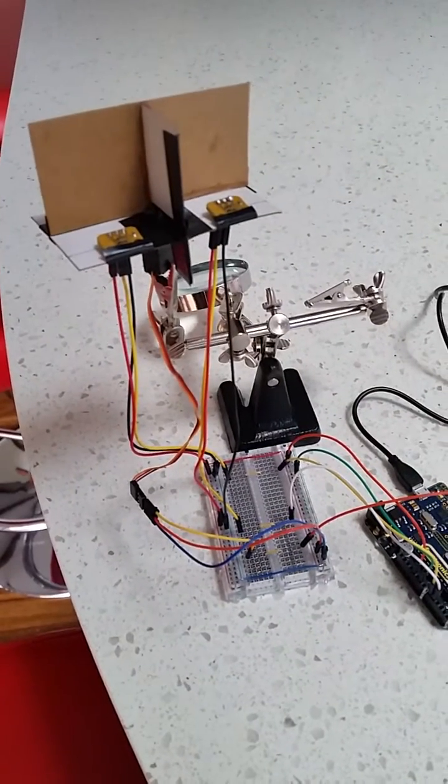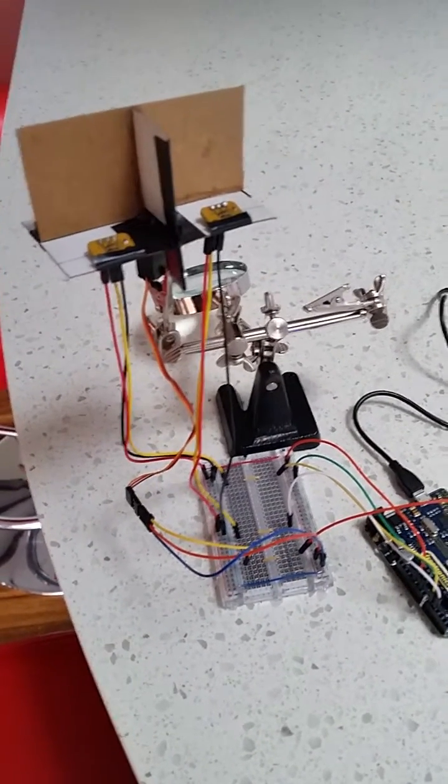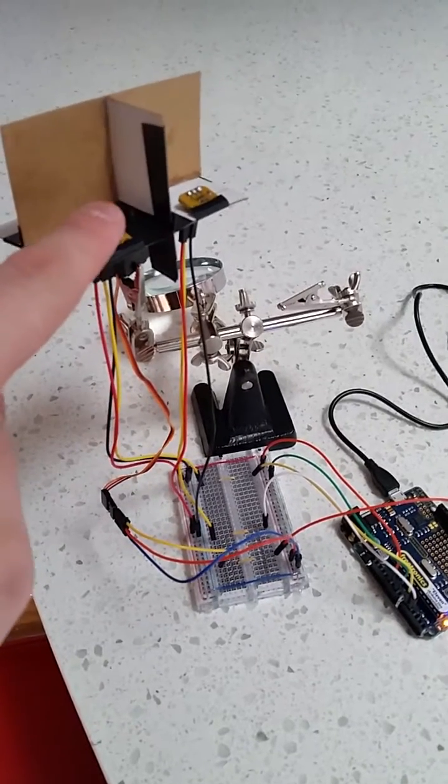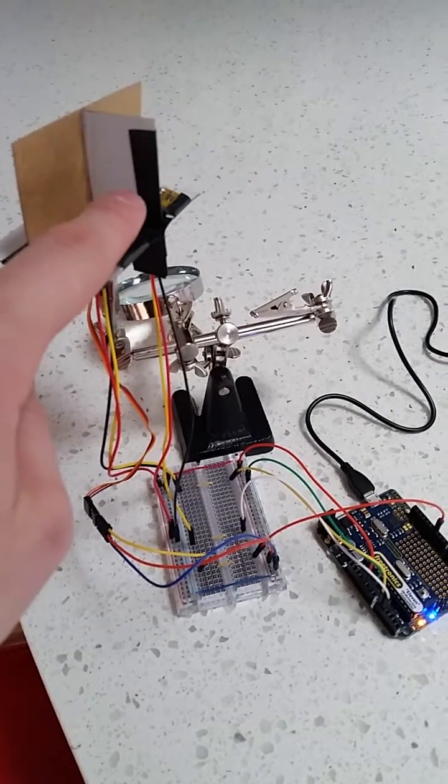All this does is seek equilibrium between the two sensors. You can see if I try to cover one up, it will move out of the way to get out of that shadow.